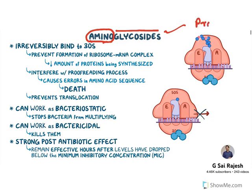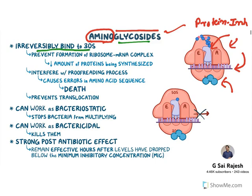Regarding mechanism of action, aminoglycosides are protein synthesis inhibitors — they inhibit protein synthesis in bacteria. In bacteria there are 50s and 30s ribosomal units, between which mRNA gets inserted and with the help of tRNA protein synthesis occurs. Aminoglycosides irreversibly bind to the 30s ribosomal unit, reducing the amount of proteins synthesized and causing errors in amino acid sequence, both of which cause the death of bacteria.